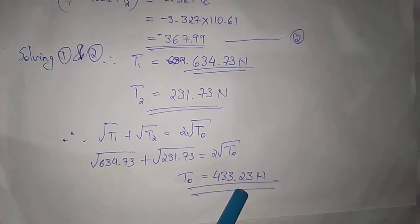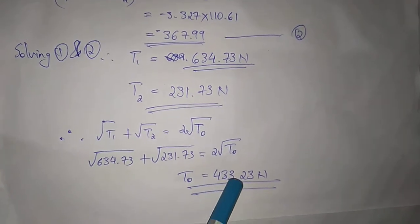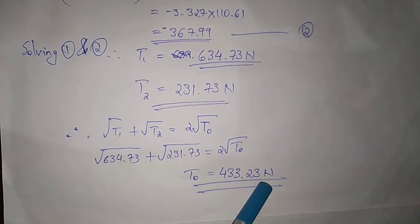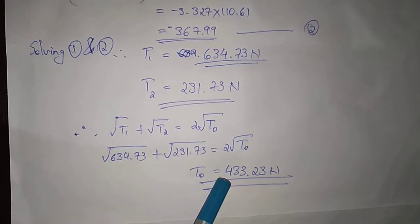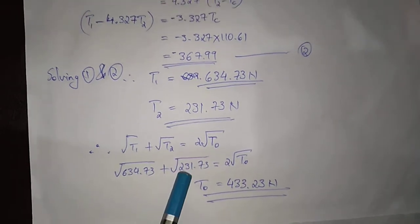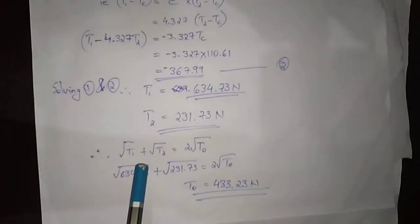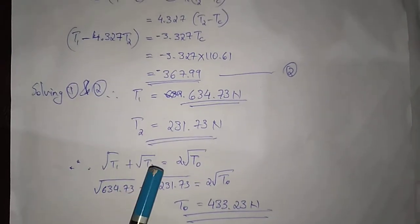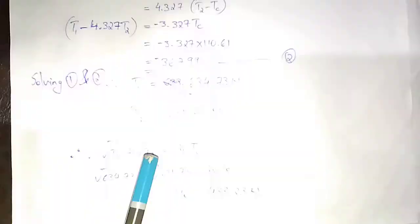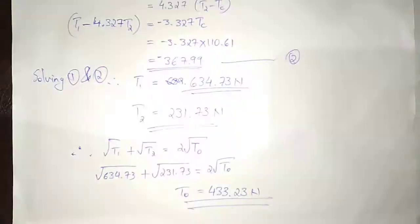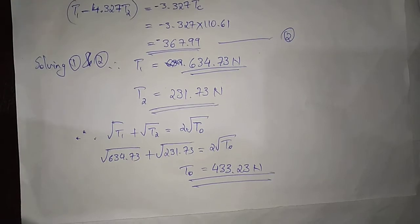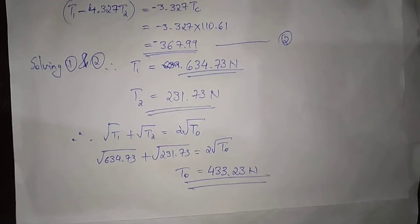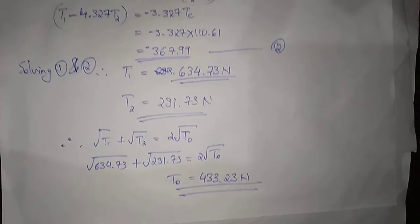This completes the flat belt design problem. T1 and T2 are now found — also noted is 433.23 N and 565.7 N in related steps. This is the complete 10-step procedure for flat belt design. If you have questions, please ask. Thank you, friends.